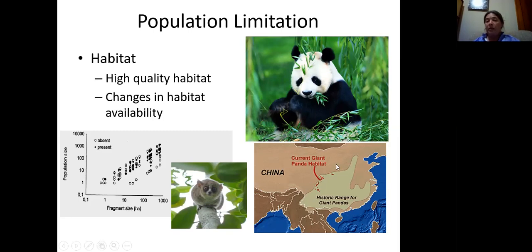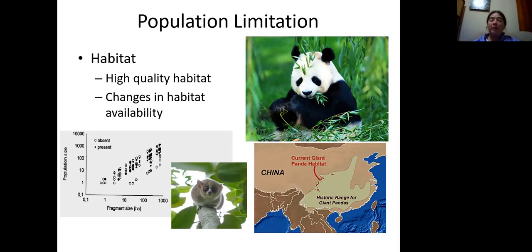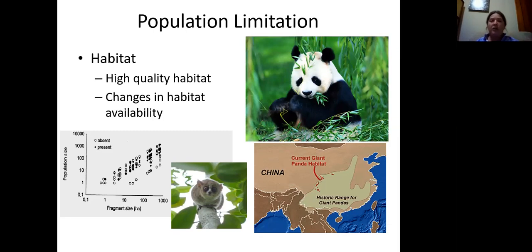The panda example shows a contrasting case. This shape here is the historical range of giant pandas and the little red speckles are where panda habitat still remains. Humans have come in and cut down the bamboo forest that pandas rely on. When you have habitat destruction, that tends to be a density-independent factor — it doesn't matter how many pandas there were. If the forest gets cut down, the pandas won't be there anymore, whether there were two pandas or 200 pandas in the forest. That would be density-independent.